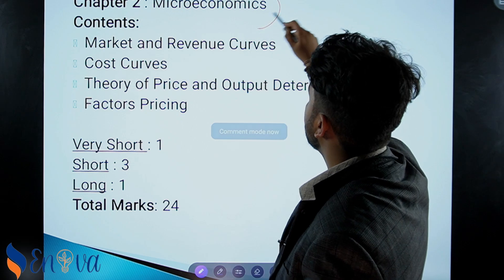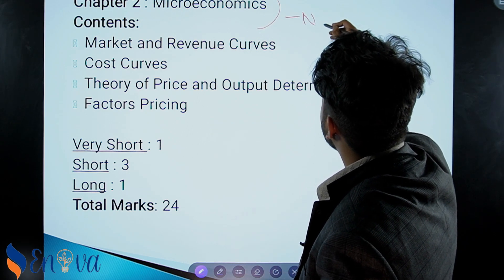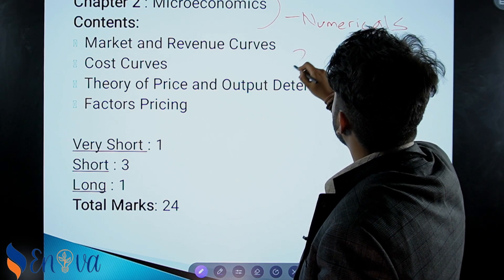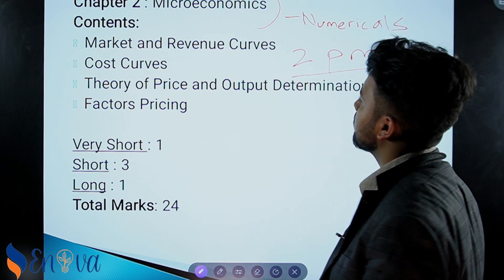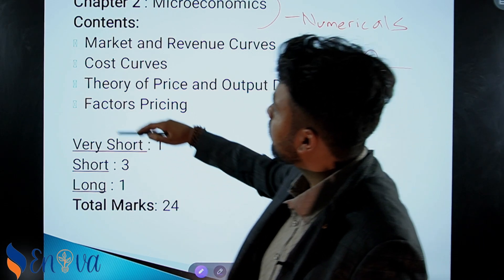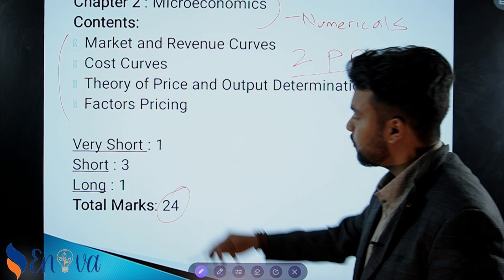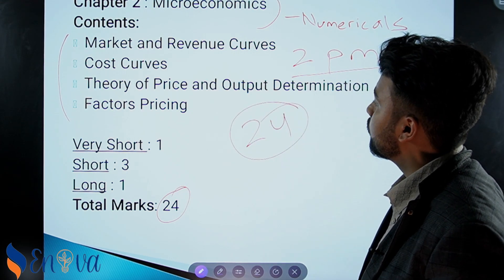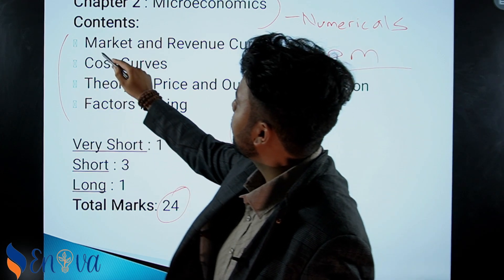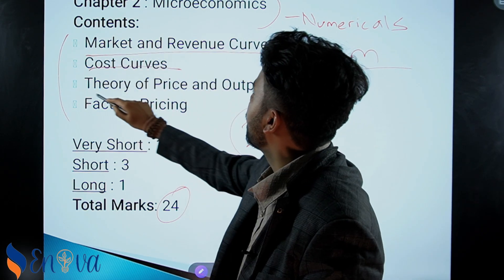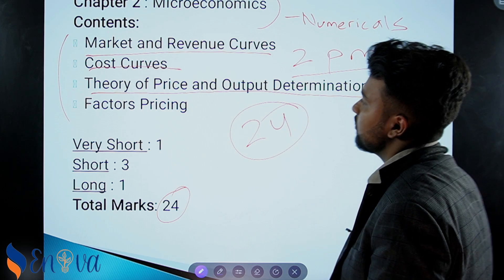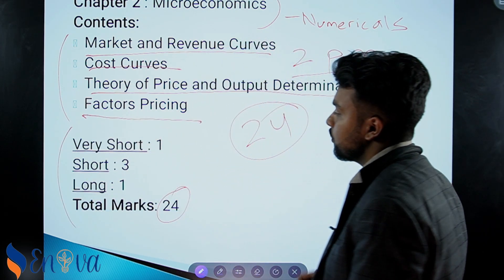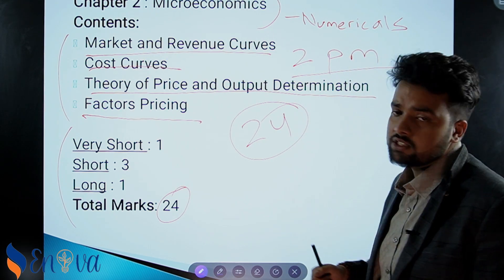We are also going to discuss numericals. Numerical discussion in macroeconomics is very important. We'll be discussing numerical topics. This covers market and revenue, cost, theory of price and output determination — with very short, short, and long question types — giving a total maximum of 24 marks. This is the most crucial section for you.